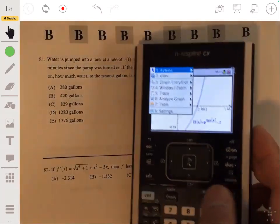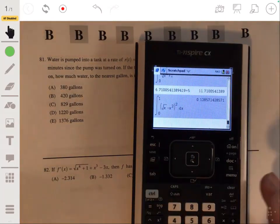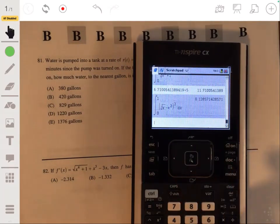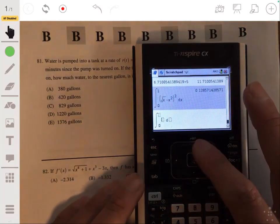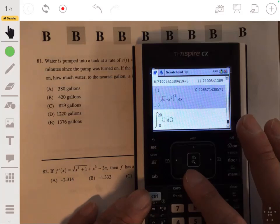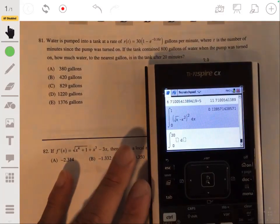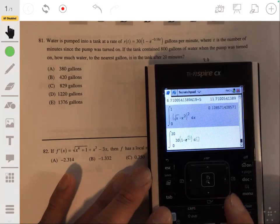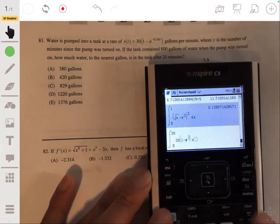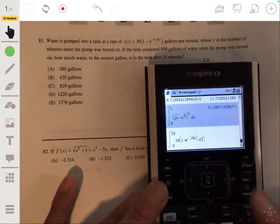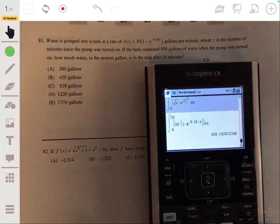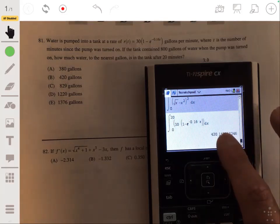So let's go to our graphing calculator. Let's go to our home screen where we got the calculator. And here we would go to the calculus, numerical integral function, 0 to 20. I'll make sure I plug this integral in correctly. So 30 times 1 minus E to the negative 0.16 T. I'll just use X to keep it simpler.